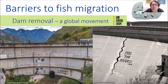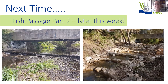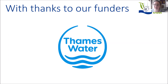OK, that's all for part one. In part two, my colleague Toby is going to be talking about some of the interventions we've done to facilitate fish passage on the rivers through the southeast. Please remember to type your questions below if you have any — this will help shape future webinars and can also mean we can do some Q&A sessions later on. Next time is Fish Passage Part Two, with Toby talking about solutions we've put in place to overcome barriers to fish migration. I hope you've enjoyed this episode of the Story of Rivers and we'll see you again soon.